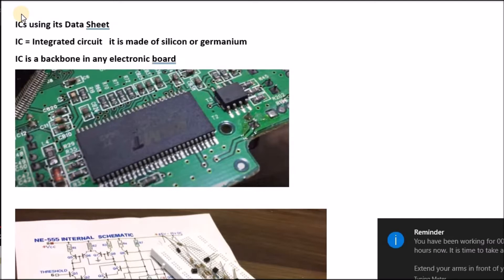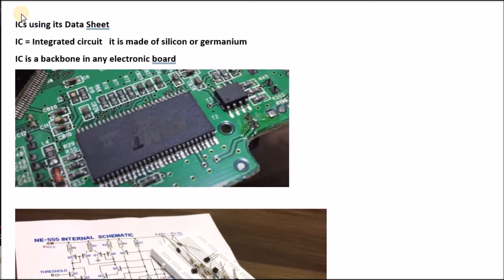IC stands for integrated circuit. We will discuss how to use and read the data sheet of an IC. An IC is made of silicon or germanium, and integrated circuits are the backbone of any electronic board or electronic device. We will cover many tips about how to use ICs in designing electronic devices, control devices, and circuits, and how to test ICs while fixed in a circuit for troubleshooting damage.